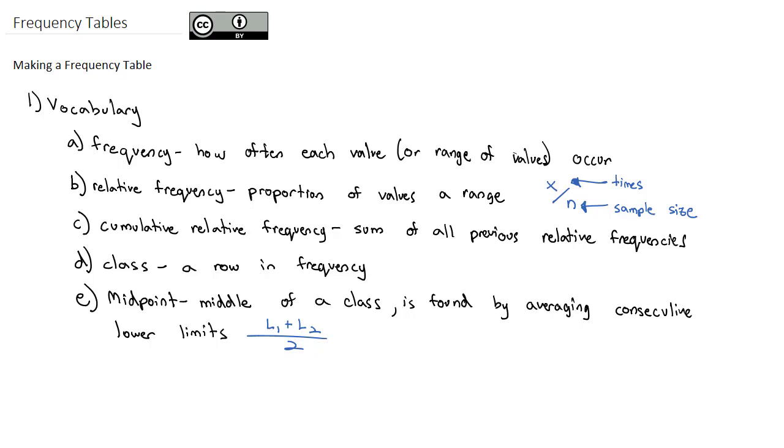So that's the vocabulary that we're going to be using. We're going to be finding the frequency, relative frequency, cumulative relative frequency, and midpoints for these frequency tables. The big thing we need to know with the frequency table has to do with the class. How do we make the classes?